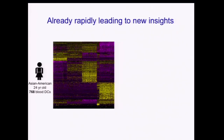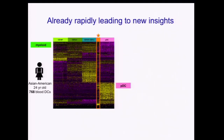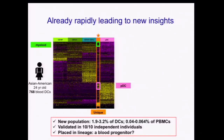These advances are already quickly leading to new insights. Here, for example, we're seeing profiles from roughly 800 dendritic cells isolated from the blood of an Asian American 24-year-old female. The vast majority allow us to identify completely from scratch all four known subtypes of dendritic cells in the blood. But there's also a small minority population — under 2% — that is quite distinct with a unique signature. These cells are only 0.06% of peripheral blood mononuclear cells, yet they are validated readily in 10 of 10 independent individuals, and we can identify them as a likely new blood precursor of human dendritic cells.